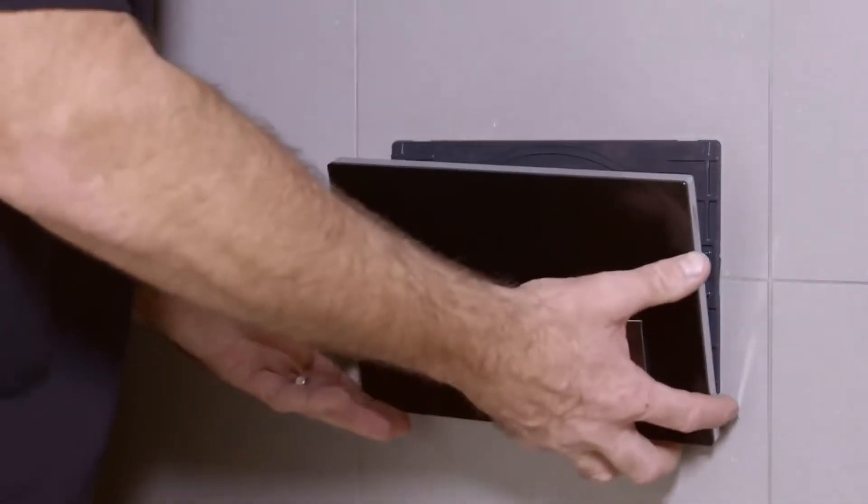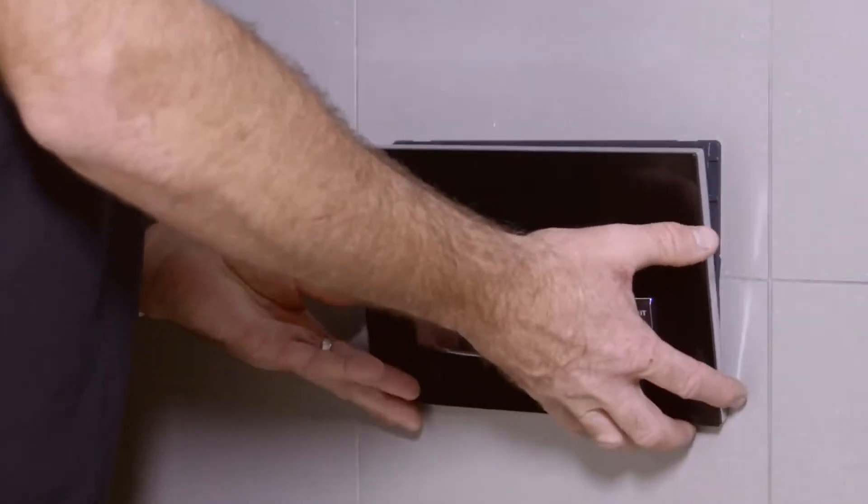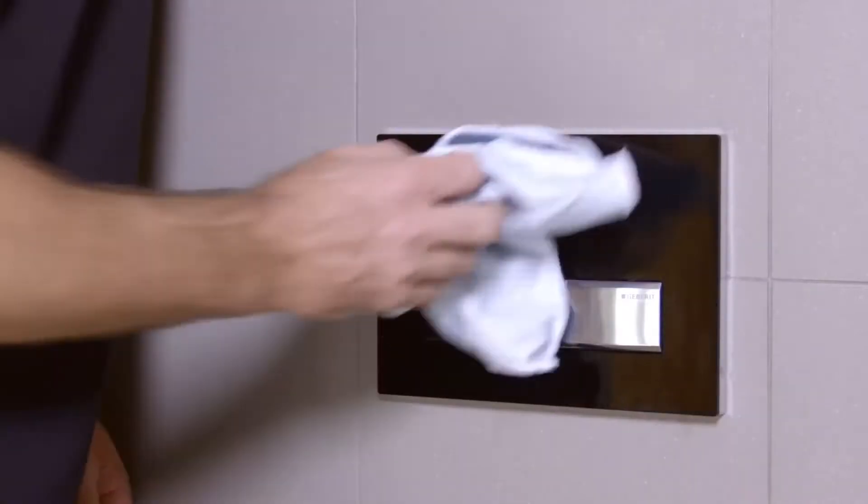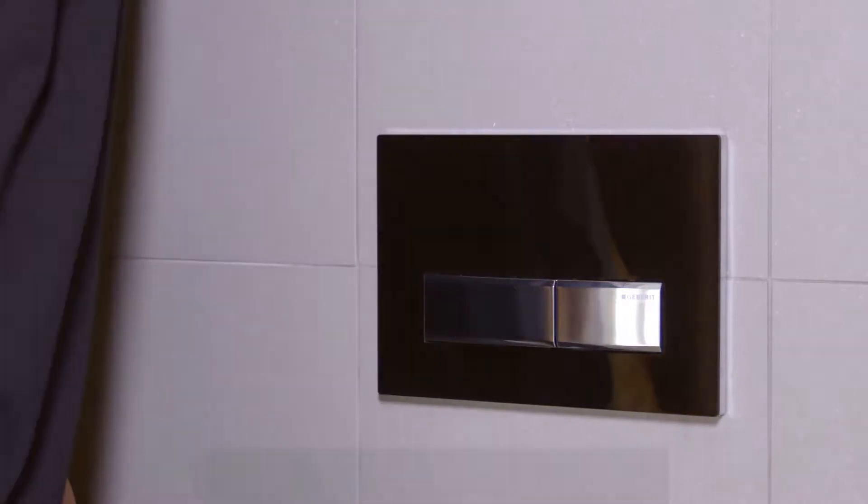Position the push plate on the wall and engage the lower side of the mounting frame. Push up against the spring and clip the button over the top of the mounting frame to locate the buttons. Now just check the system flushes correctly.